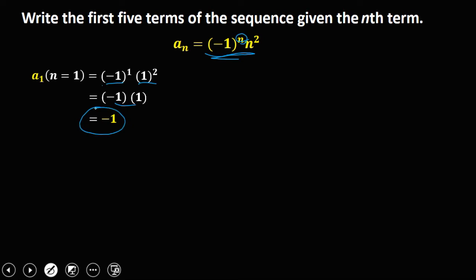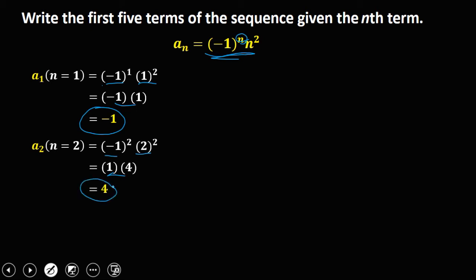For the second term, that's a sub 2. So n is now equal to 2. Substituting, we have negative 1 to the power 2 times 2 squared. Negative 1 squared is positive 1, and 2 squared is 4. And 1 times 4 is positive 4. So this is the second term.